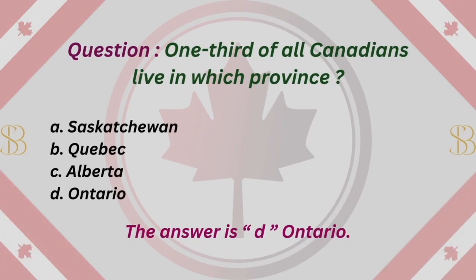Question: One-third of all Canadians live in which province? A. Saskatchewan. B. Quebec. C. Alberta. D. Ontario. The answer is D. Ontario.